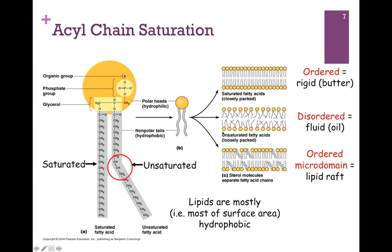On the other hand, if they're unsaturated, they can't pack together quite as well. They tend to be more disordered and are fluid at room temperature, like oils. Sometimes in lipid bilayers there are ordered microdomains, referred to as lipid rafts, but we'll see more of that a little bit later.